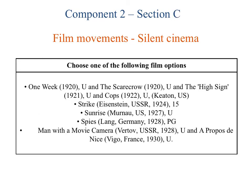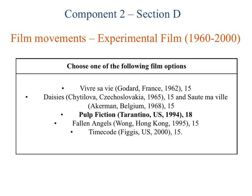Section C is an opportunity to go right back to the beginning of cinema and look at film movements, specifically silent cinema. Component 2, Section D gives us the opportunity to look at experimental film — alternatives to the mainstream films we've become used to with Hollywood blockbusters — and here we're most likely to watch Pulp Fiction, as it's such a significant film from 1994.